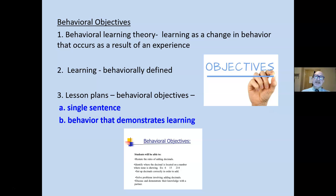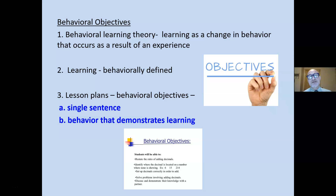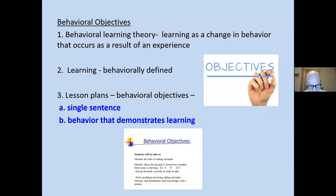Behavioral learning objectives reflect the behavioral learning theory that learning is a change in behavior occurring as a result of experience. So, according to behaviorists, lesson plans should have a behavioral objective — a single sentence that defines the behavior we would like to see occurring as a result of learning. You can say yes or no as to whether the student has achieved that behavioral objective. For example: 'Students will complete 9 out of 10 correctly on the short A worksheet.' Yes, they did. No, they did not.